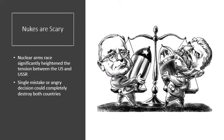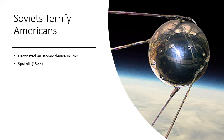A huge aspect of the Cold War is the threat of nuclear war. Nuclear war is scary, and it keeps the countries from going to war directly because they have the power to destroy each other. But a nuclear arms race significantly heightened the tension between the United States and the USSR — a single mistake or angry decision could completely destroy both countries. The Cold War really changes when the Soviet Union detonates an atomic device in 1949, becoming the second nuclear power. For four years the United States had been the only country with atomic weapons — now the Soviet Union had them too, and the idea that the Soviets can now destroy the United States with nuclear weapons terrified Americans.